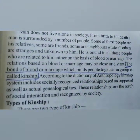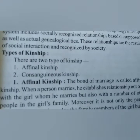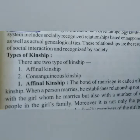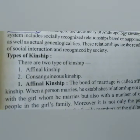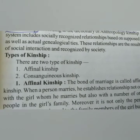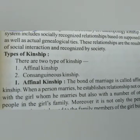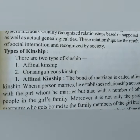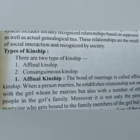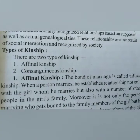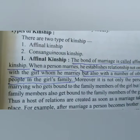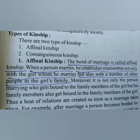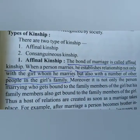Next we will learn the types of kinship. There are two types of kinship: the first one is affinal kinship, and the second one is consanguineous kinship. The bond of marriage is called affinal kinship.